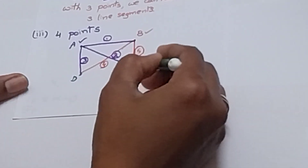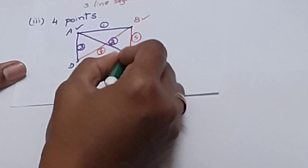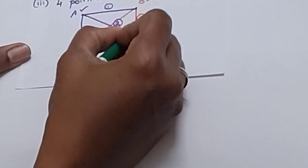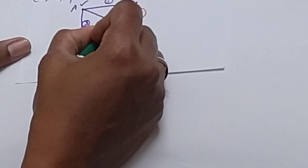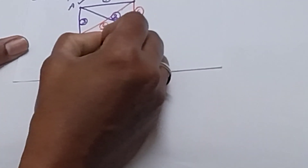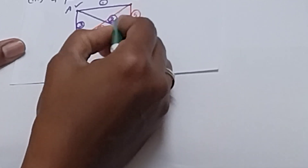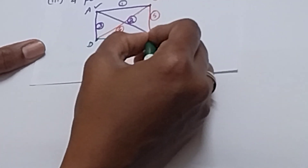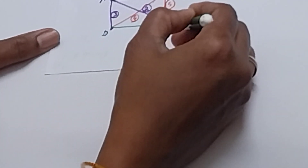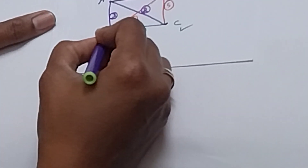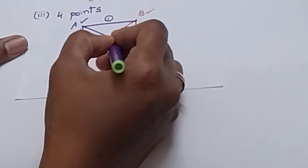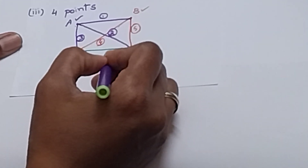We move to C. With C, we try to connect all remaining points. C to B — already connected, ignore. C to A — already connected, ignore. C to D — this is a new one, so this is the 6th line segment. C is connected with A, B, D. Now we check point D. D to A — connected, ignore. D to B — connected, ignore. D to C — already connected, ignore.